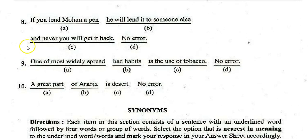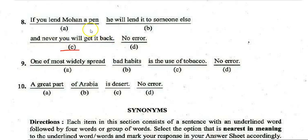Next: 'If you lend Mohan a pen, he will lend it to someone else and never you will get it back.' The error lies in section C — the correct sentence is 'and you will never get it back.'